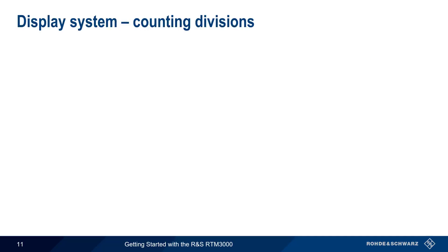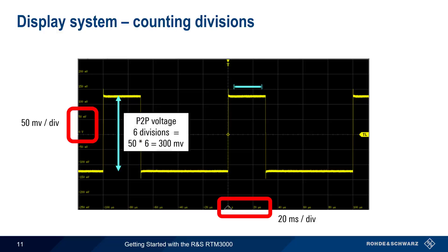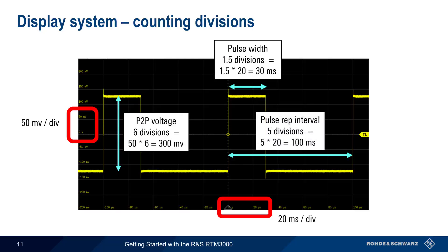Now let's look at the display system. Consider the square or pulsed waveform. If we wanted to know things like peak voltage, pulse width, or pulse repetition interval, we could of course look at volts per division, here 50 millivolts per division, and seconds per division, here 20 milliseconds per division, and then start counting divisions and doing the math. Even with conveniently round numbers like the ones we have here, this is a time-consuming and error-prone process.